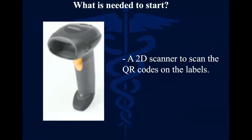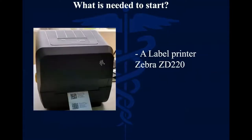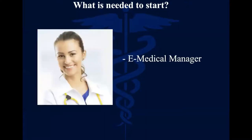So what do we need to start correctly? We need a 2D scanner — 2D means it can read QR codes on labels. We need a label printer. A very good option is the Zebra ZD220, which prints on labels of 5 cm by 2.5 cm. The entire program is designed around printing the same kind of labels with those dimensions. You don't need multiple label printers — one is far enough. Then you use eMedical Manager.